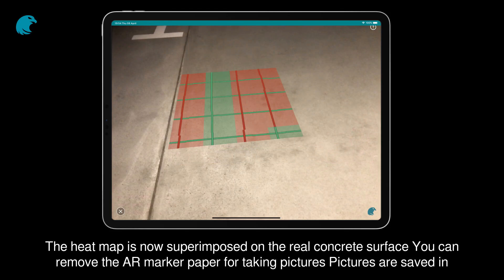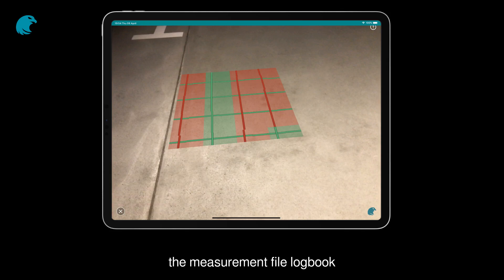The heat map is now superimposed on the real concrete surface. You can remove the AR marker paper for taking pictures. Pictures are saved in the measurement file logbook.